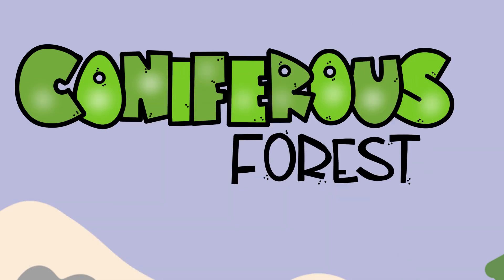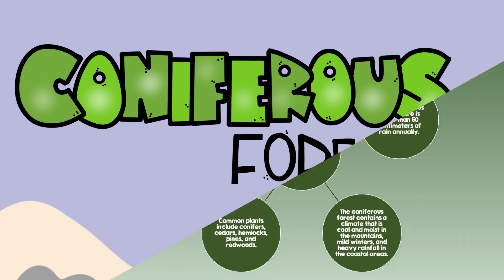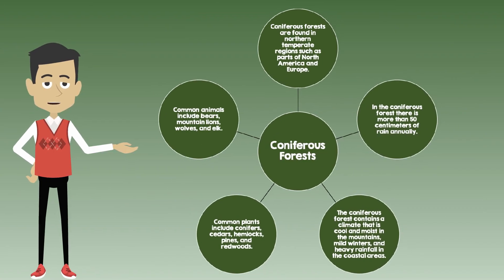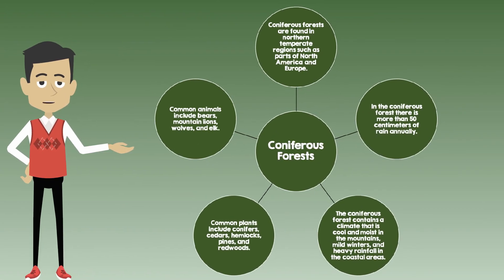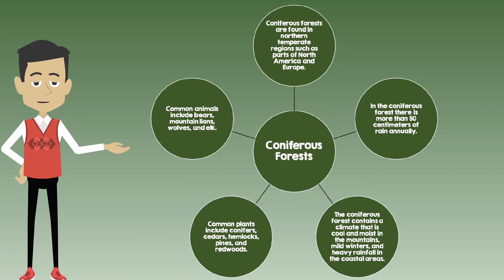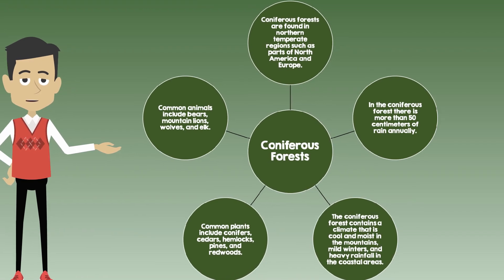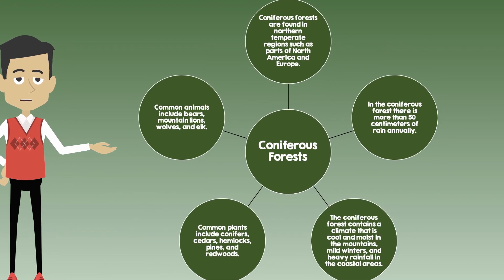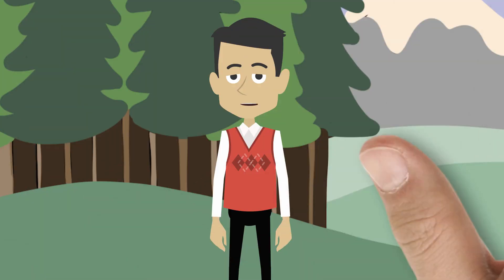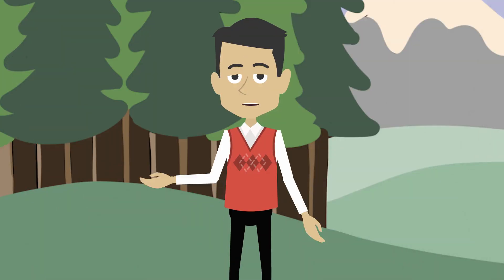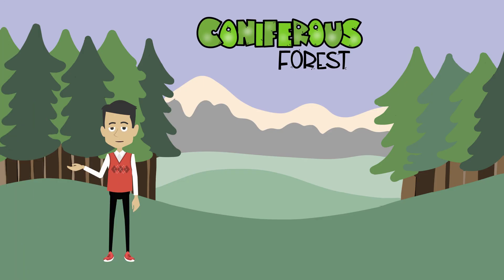Coniferous forests are found in northern temperate regions, such as parts of North America and Europe. In the coniferous forest, there is more than 50 centimeters of rain annually. The coniferous forest contains a climate that is cool and moist in the mountains.